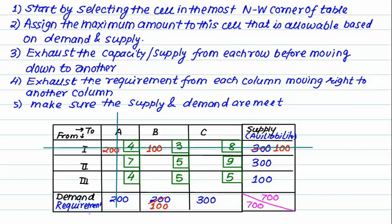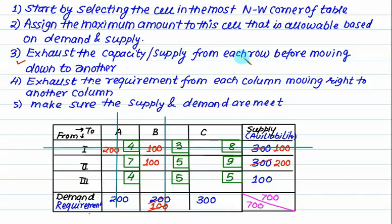With reference to the next unoccupied cell, the capacity required is 100 and production available is 300, so 100 is allotted, leaving 200 in that row. Moving forward, 300 is required but we must finish the row first. We supply 200, leaving demand of 100. Plant 2's capacity is completely exhausted. Finally, the remaining 100 supply meets the remaining 100 demand — so 100 is allocated there.